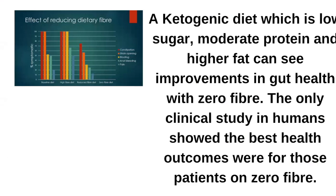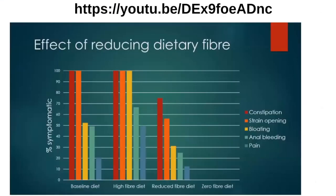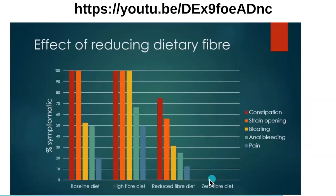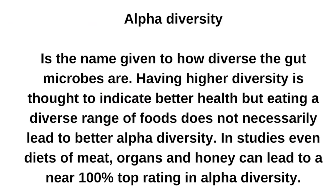I want to plug Dr. Paul Mason, who looked at the effects of reducing dietary fiber - one of the only studies done on human beings. As he reduced fiber, conditions just reduced and reduced, and in fact zero fiber had no problems. The baseline diet showed constipation, straining, bloating, anal bleeding, and pain. Increasing fiber made those outcomes worse. Reducing fiber improved them. And on the zero fiber diet there were no symptoms - he didn't forget to put the data in, it just isn't there because everything cleared up.